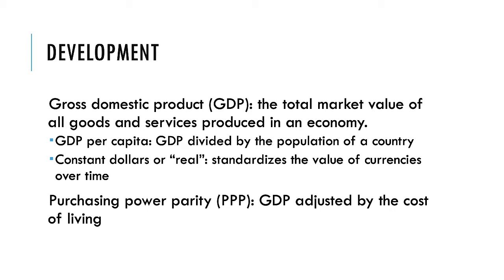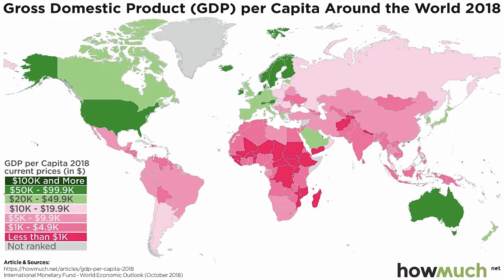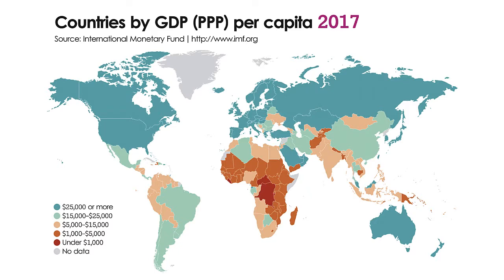Another is to refer to constant dollars, essentially taking into account variation in the value of currencies over time. Wealthy countries typically have a GDP per capita of more than $30,000 a year, while the poorest have GDP per capita below $500 a year. Other measures of development will take matters such as the cost of living into account — purchasing power parity, or PPP, does just that.